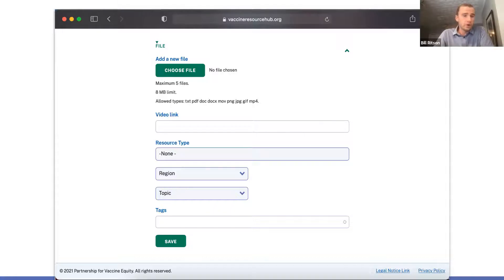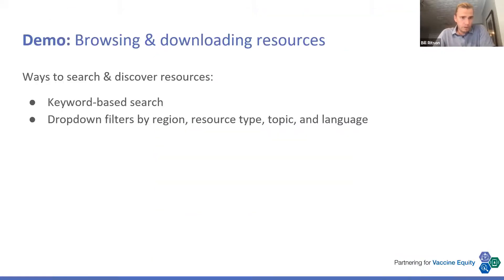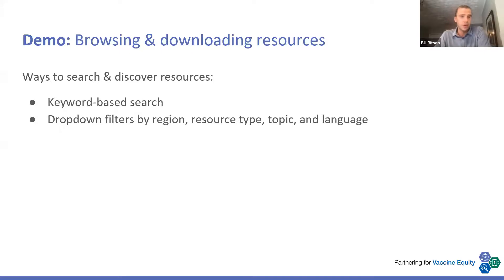Once you've completed all these items — which are all optional inputs — you can click save to submit. That uploads the data and the resource for our content managers to review. They'll look at all the resources that have been uploaded and all the data items to make sure there's accuracy and compliance against the criteria that the CDC Foundation is working on, to make sure everything is accurate, relevant, and trusted information. That's the upload process. It should be pretty straightforward, and we're happy to field any questions.